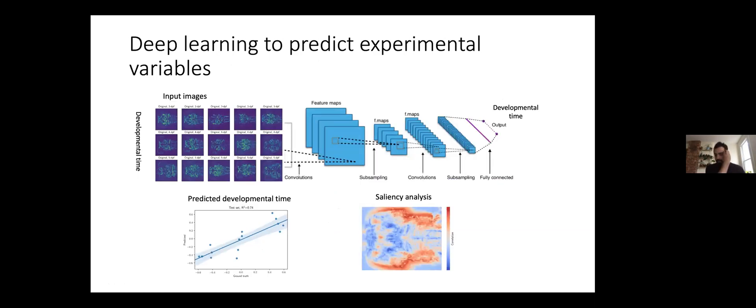A second approach is to do supervised learning. Here we do have the labels and we have a deep convolutional neural network that takes the input images and tries to predict our experimental variables, for example developmental time. Our model is very successful at doing so. In the process, after training, we can use what is called saliency analysis to identify patterns in the data that are particularly predictive of these experimental variables. In the process we can learn something about biology.